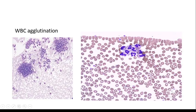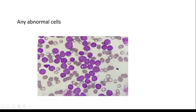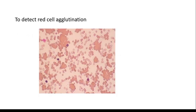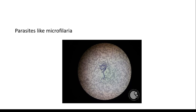WBC agglutination can be seen at the edges and tail end of the film. If a few abnormal cells are present, it is easy to find under low power. Rouleaux formation and red cell agglutination can be identified under low power. Sometimes, you can see parasites like microfilaria while scanning the slide.